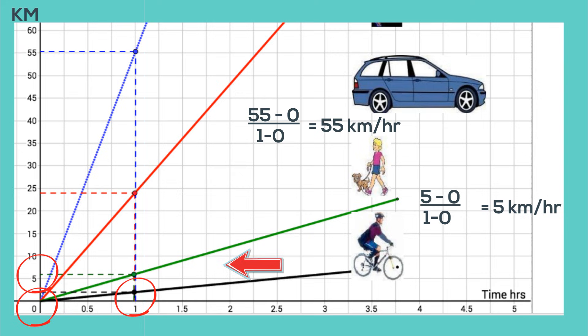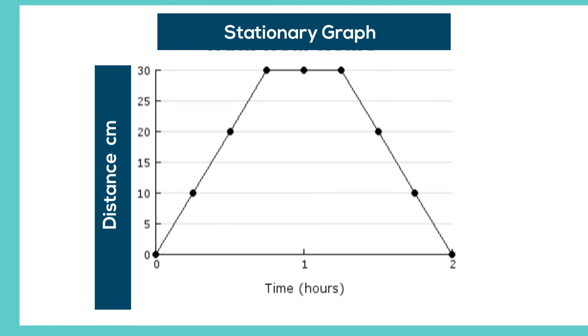So you can see the greater the slope, the greater the speed. Sometimes you'll encounter a graph in which you have a flat line. And this tells you that the speed is zero or the movement is stationary.